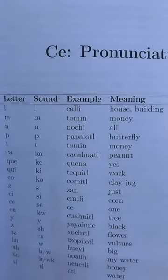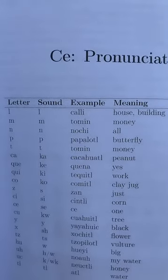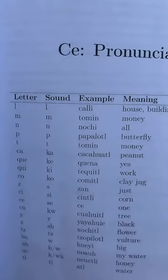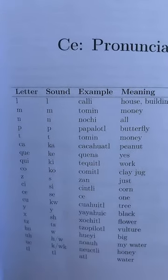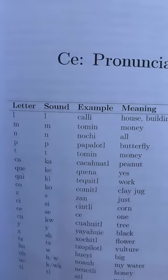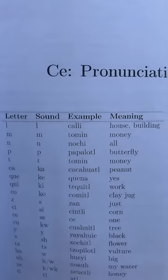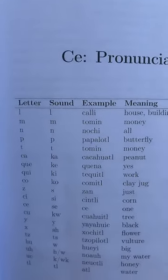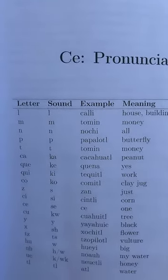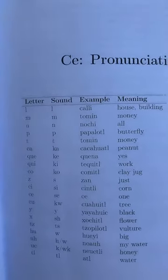'Nochi' means all. So when I say 'Ika Nochi Noyolo,' that means with all my heart. 'Papalot' means butterfly. There's a canto that goes 'way way papalot' — that is a canto for the butterfly. 'Cacahuat' means peanut. It's cool to see how certain words are derived directly from Nahuatl — 'cacahuat,' which sounds like 'cacahuate.' 'Kenna' or 'kema' means yes. This is modern Nahuatl and there are different forms of the word.